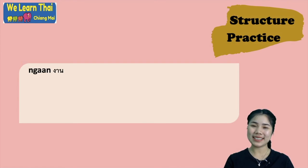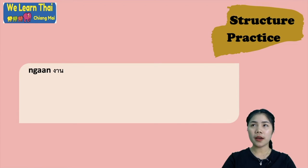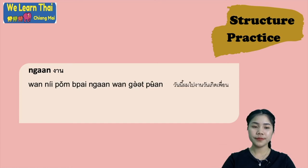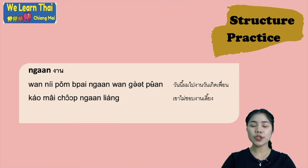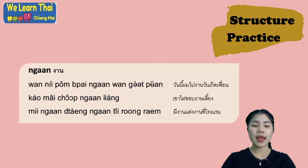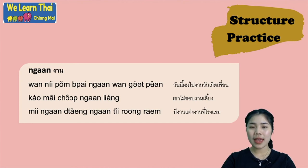And the next, let's talk about structure practice. The first one with the word งาน — it means event or affair. วันนี้ผมไปงานวันเกิดเพื่อน — today I will go to my friend's birthday party. เขาไม่ชอบงานเลี้ยง — he or she doesn't like parties. มีงานแต่งงานที่โรงแรม — there is a wedding ceremony at the hotel.